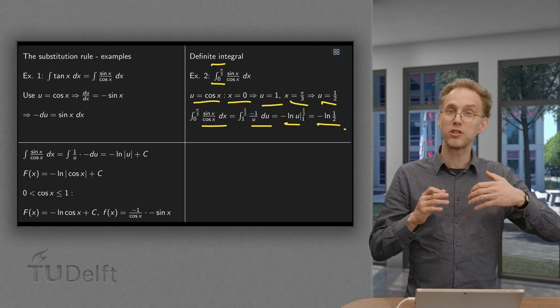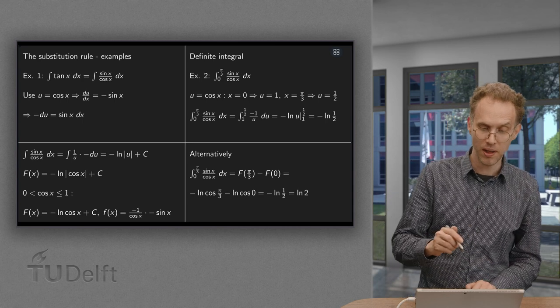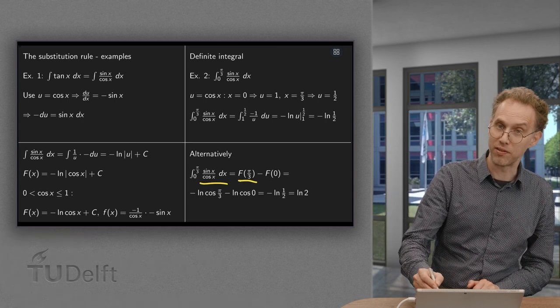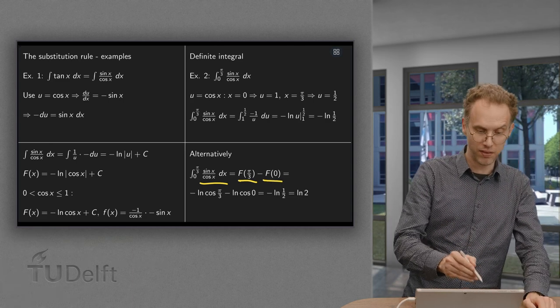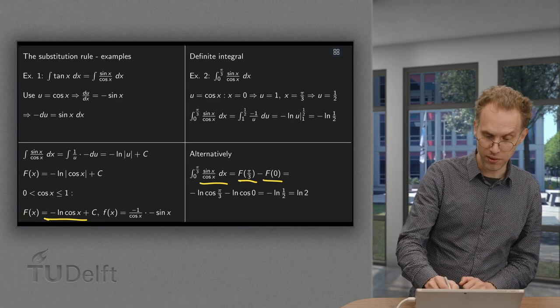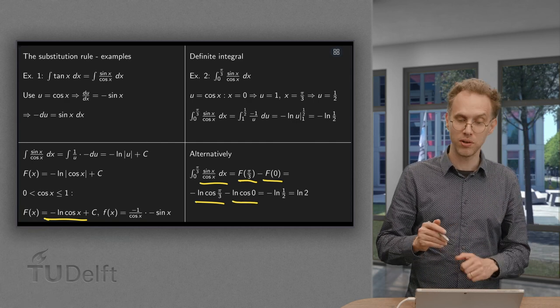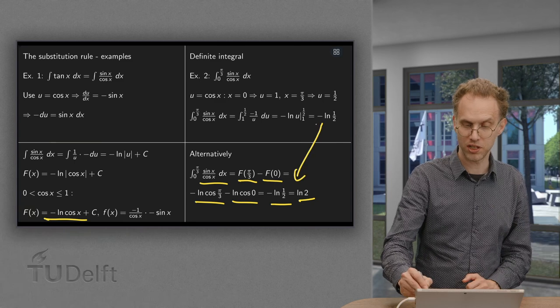Of course, we can also use the antiderivative. So what can we do as well, alternatively? The integral equals the antiderivative at π/3 minus the antiderivative at 0. We know the antiderivative. It's over here. So we have minus the ln of cosine π/3 minus ln of the cosine of 0. So it gives us minus ln of 1/2 equals ln of 2, which is, of course, the same.